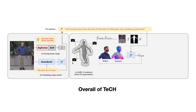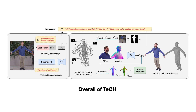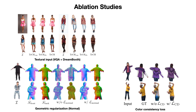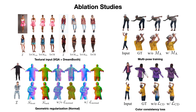Besides these losses, additional color regularization is added, where LCD harmonizes color consistency across different views, and normal predictions are used to regularize the reconstructed surface for consistency and smoothness. We want to show the effect of the textual input constraints, the geometric and color regularization, and multi-pose training via qualitative ablation studies.